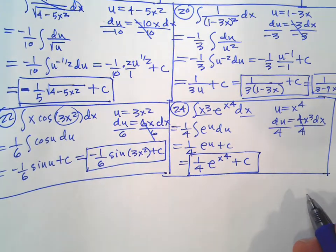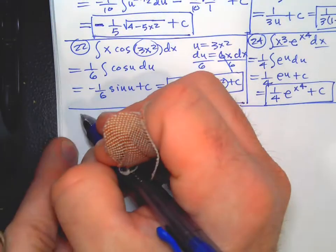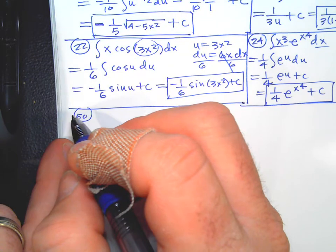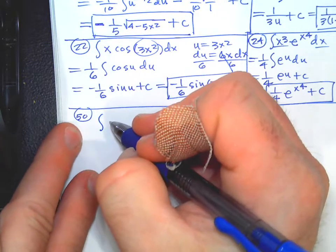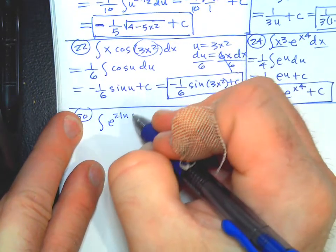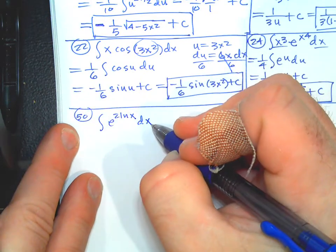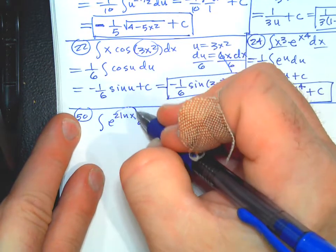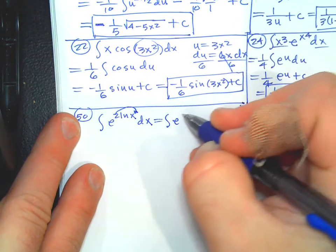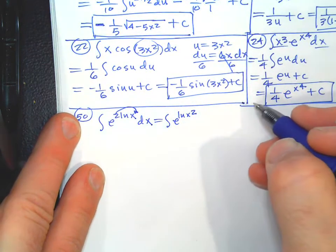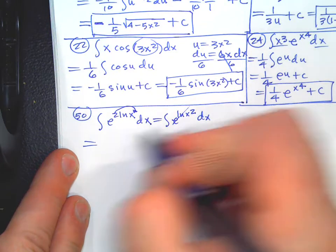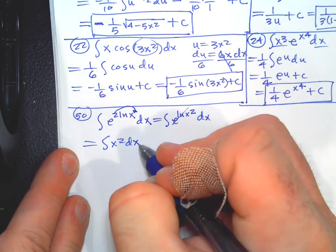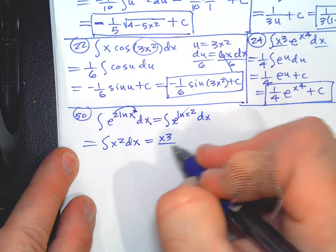Problem 50 says evaluate each integral by first modifying the form of the integrand, then make an appropriate substitution if needed. On these ones they're saying try to simplify first. We could use log rules to rewrite it as e^(ln x²) dx — and since e and natural log are inverse operations, that's just x². So it becomes x³/3 plus C. Sometimes just clean things up first.